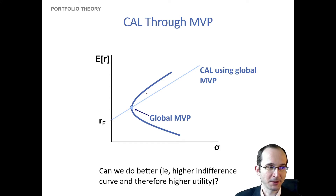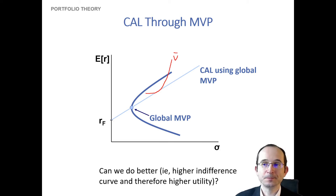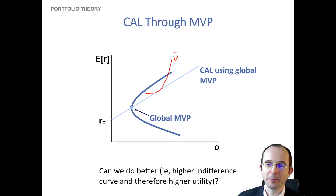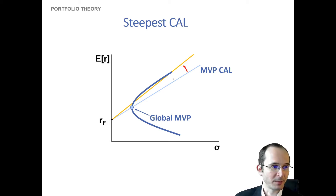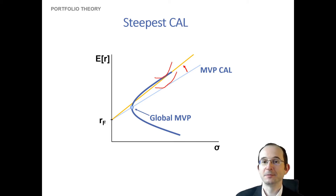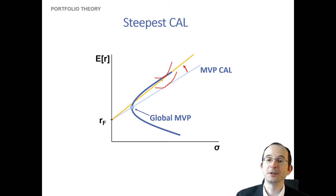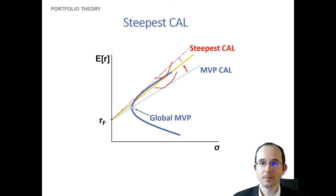For example, let's say we are on indifference curve U-bar. If we go to a different capital allocation line at a point higher on the minimum variance frontier, our capital allocation line will have a steeper slope. We can then get onto a better indifference curve — and remember, higher indifference curves mean higher utility, because for the same level of risk they have higher expected returns.